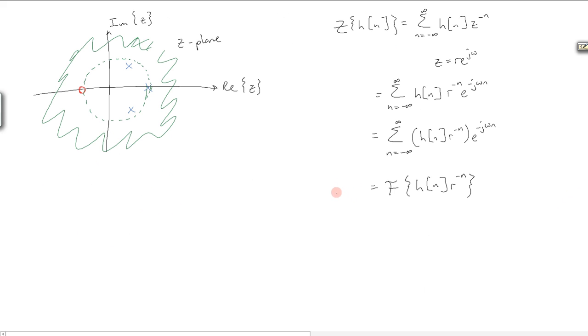Similarly to the Laplace transform, we can actually see something interesting here. We can find the Fourier transform of h of n itself if r is equal to 1.